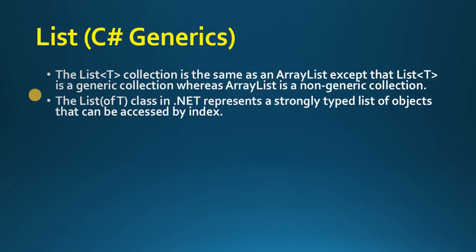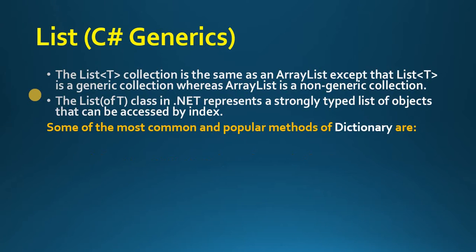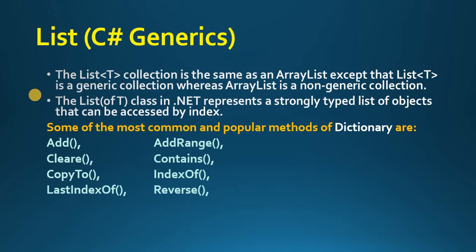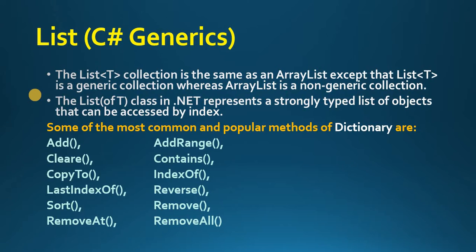The List<T> class in .NET represents a strongly typed list of objects that can be accessed by index. Some of the most common methods available include: Add, AddRange, Clear, Contains, CopyTo, IndexOf, LastIndexOf, Reverse, Sort, Remove, RemoveAt, RemoveAll. Properties include Count and Capacity. I am going to discuss some of the most commonly used methods here.